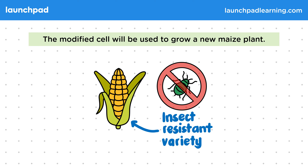We could also use genetic engineering to produce bigger and better fruit. You don't need to memorize this maize example, but you do need to understand the general idea that genes are cut out from one organism and inserted into another one.